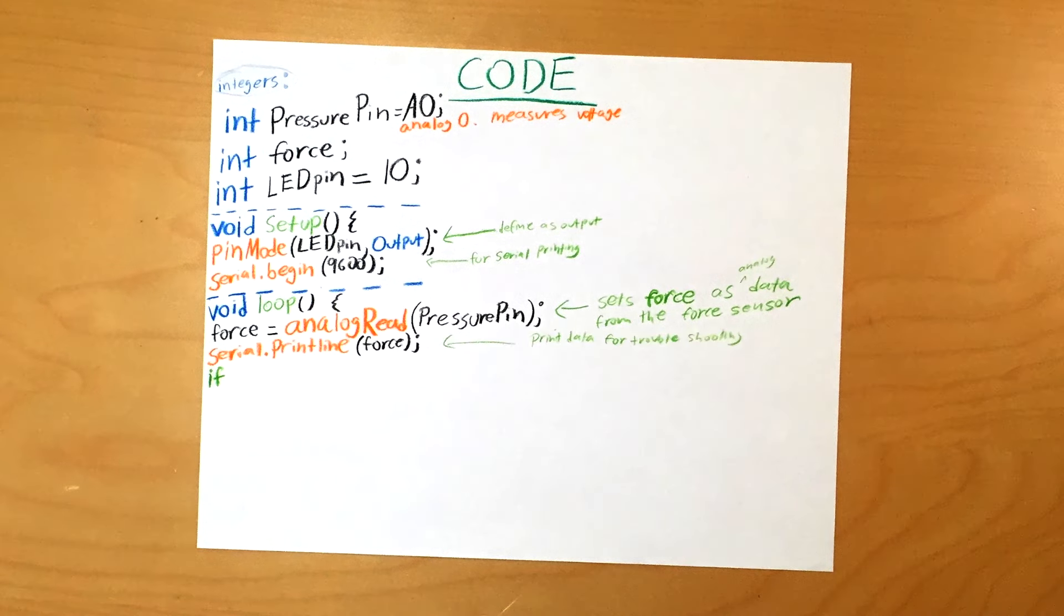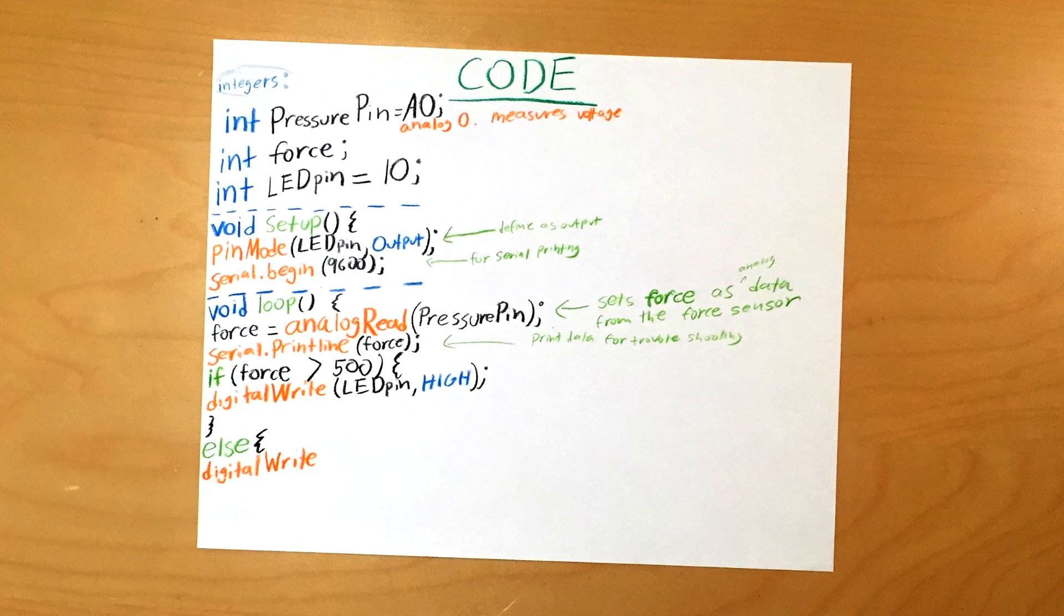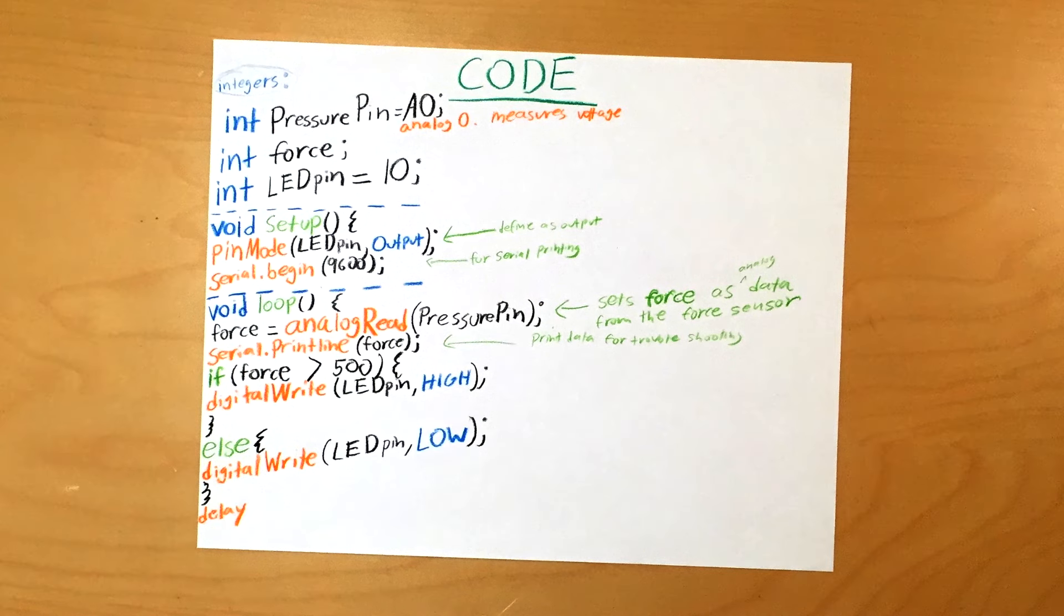Now let's make an if statement. If the integer force is greater than 500, then run the command digital write LED high. This basically says that if more than a medium amount of force is applied, then turn the LED on. For the else section of the if statement, put digital write LED pin low. This command turns the LED off.